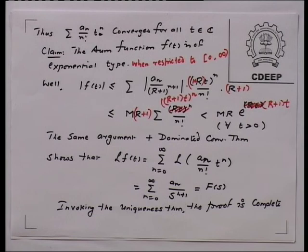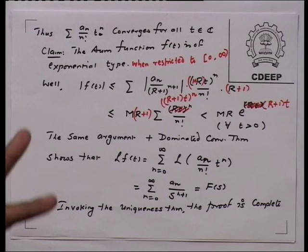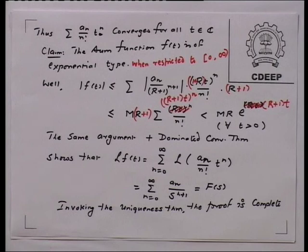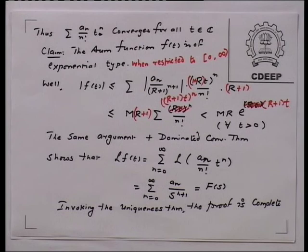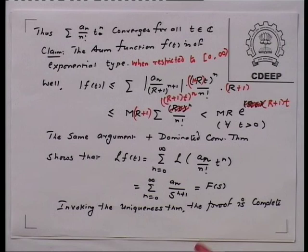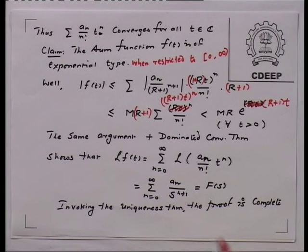The same argument plus the dominated convergence theorem will tell you that taking the Laplace transform term by term is valid. When you take the Laplace transform term by term, you are multiplying the infinite series by e to the power minus st and integrating term by term — exchanging a summation and an integral. The dominated convergence theorem requires an estimate, which has already been done. Using that estimate allows you to exchange summation and integration, and you get that the Laplace transform of little f is capital F — in other words, the inverse Laplace transform of F is f. This procedure has been completely justified.